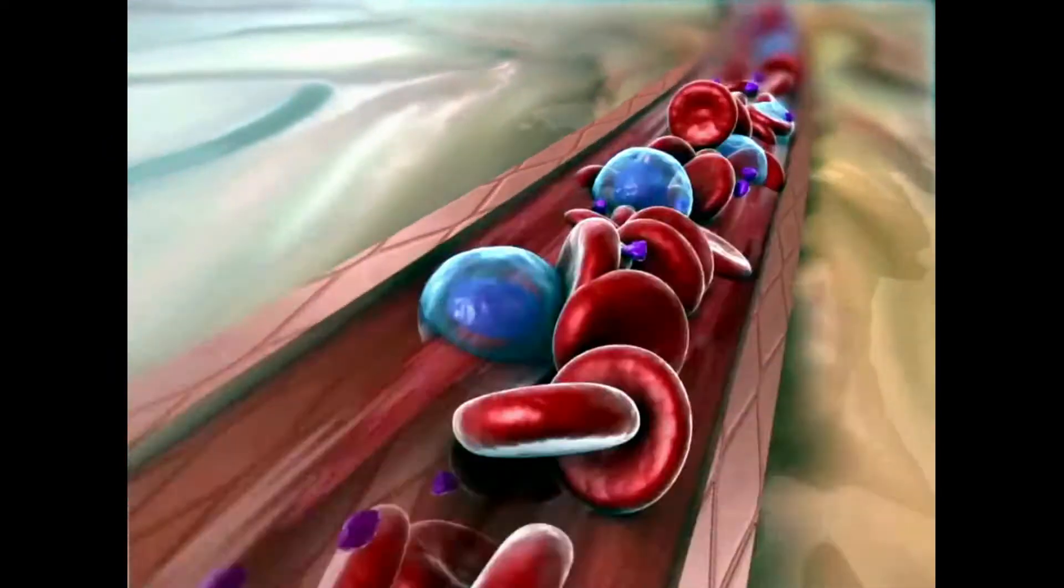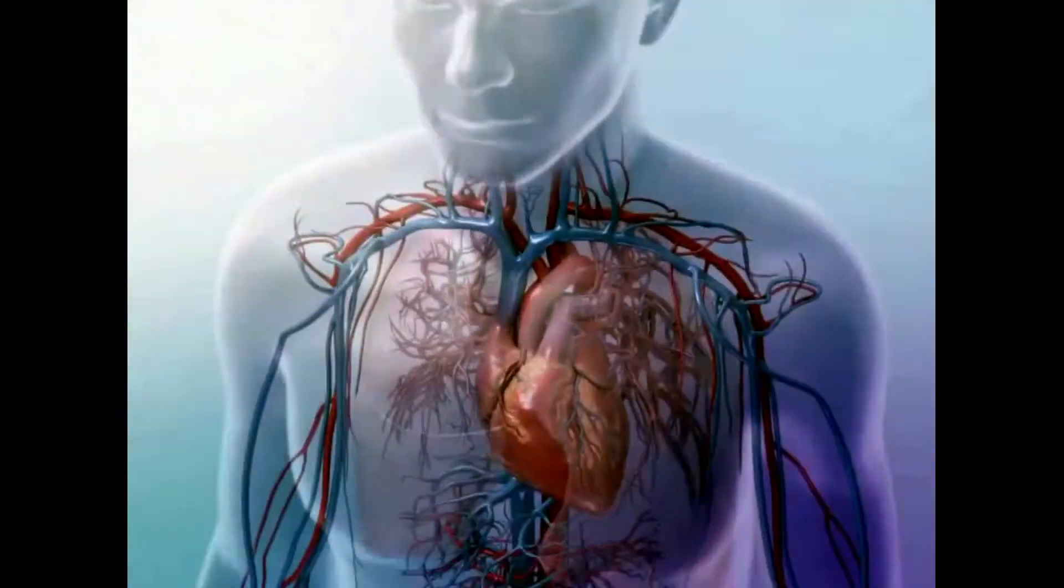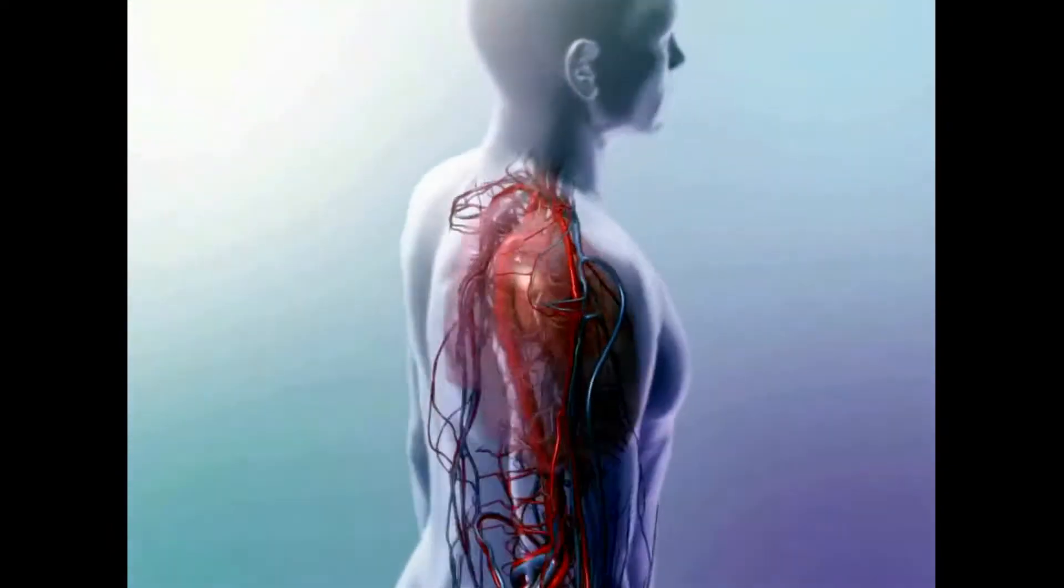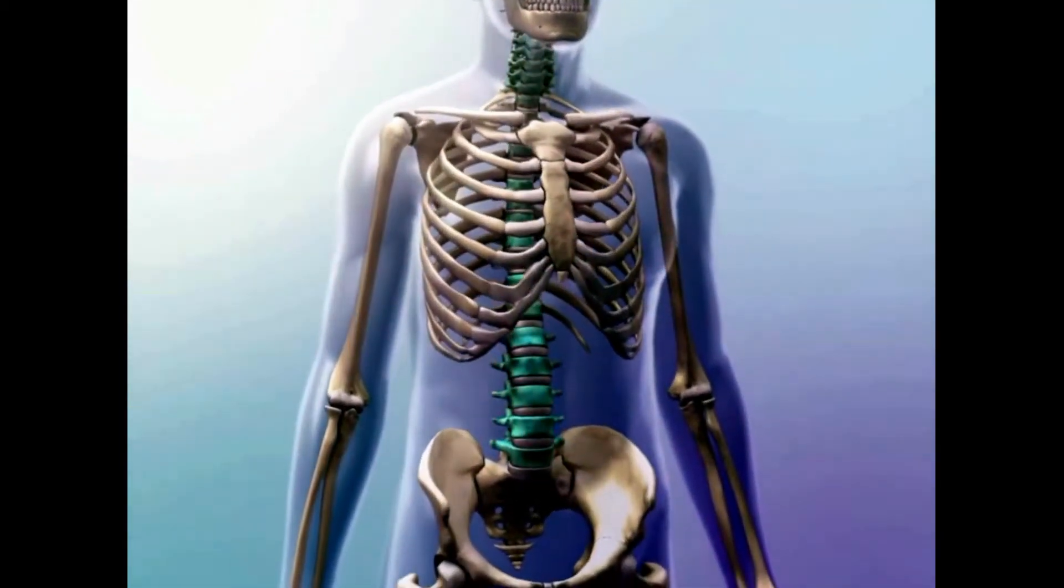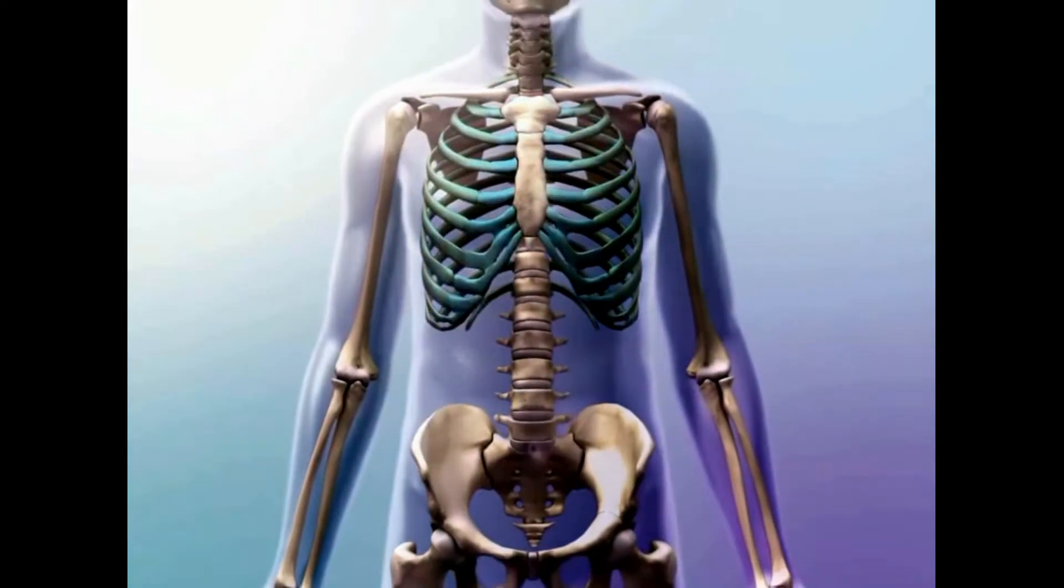Red blood cells are produced inside the bones of the skeletal system, particularly in the vertebrae, sternum, ribs, and pectoral and pelvic girdles.